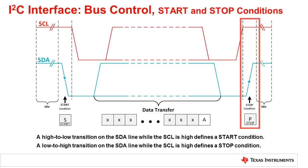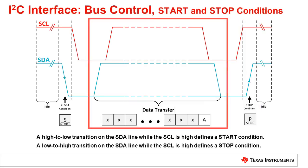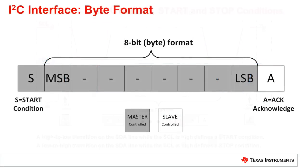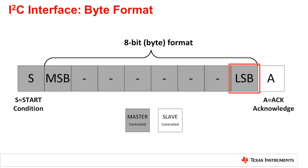In between the start and stop conditions, the communication of data must be performed. The I2C standard defines every I2C data transaction in an 8-bit format, or sometimes called a byte, with the most significant bit, MSB, at the beginning of the frame, and the least significant bit, LSB, at the end of the frame, followed by either an acknowledge or a no-acknowledge.